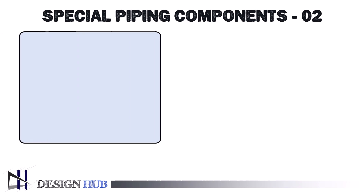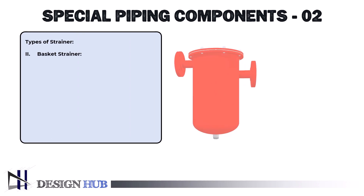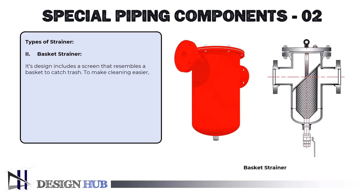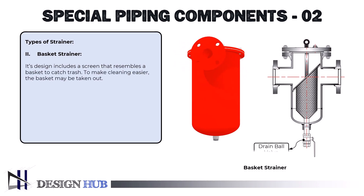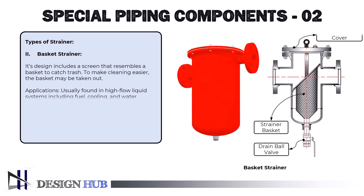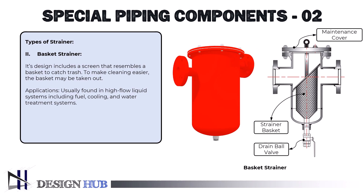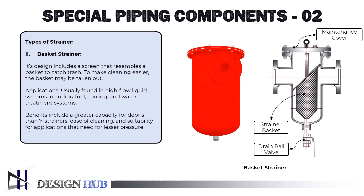The second one is the basket strainer. Its design includes a screen that resembles a basket to catch trash. To make cleaning easier, the basket may be taken out. Applications: usually found in high-flow liquid systems including fuel, cooling, and water treatment systems. Benefits include a greater capacity for debris than Y strainers, ease of cleaning, and suitability for applications requiring lesser pressure drops.